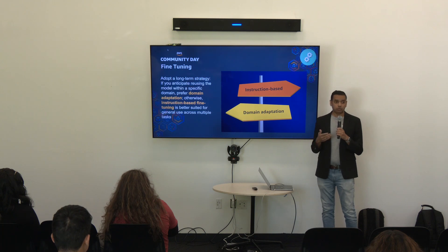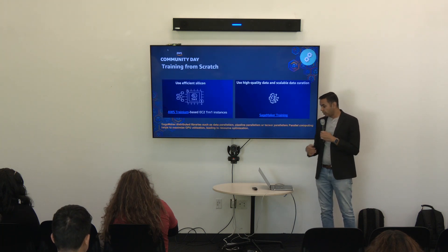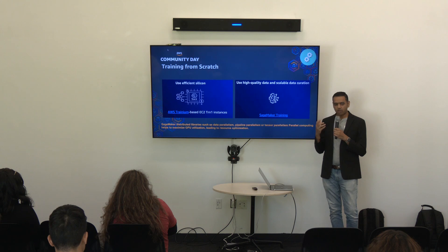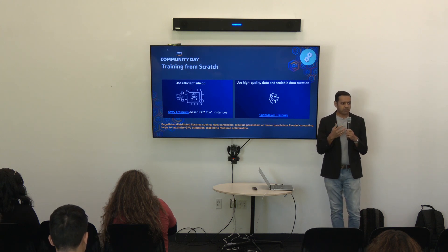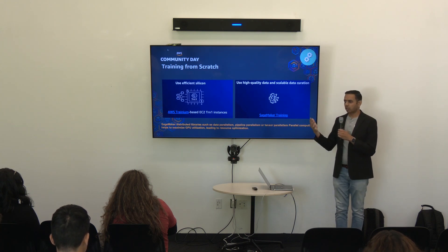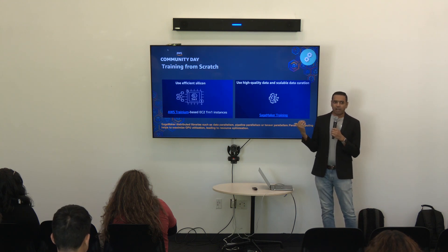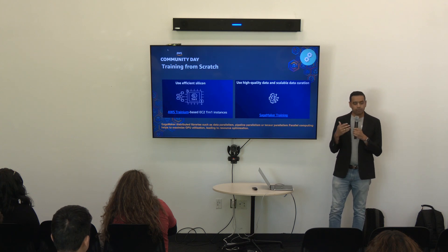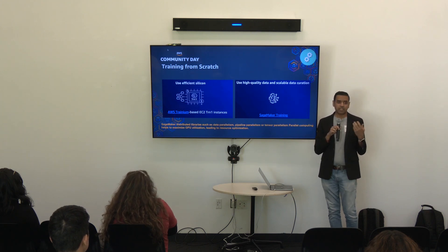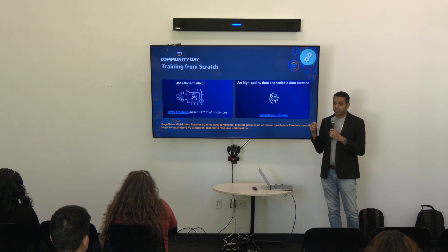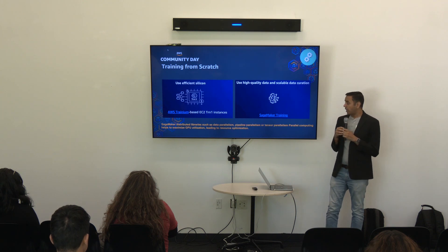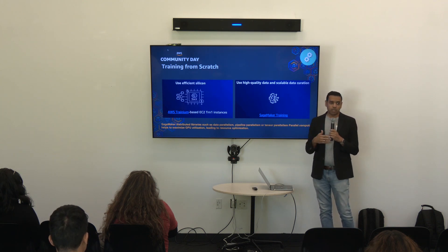If even full fine-tuning cannot solve the problem, the last option is to train your own model. Right now this hasn't been widely adopted, but just as web applications eventually became universal, after five years there could be a scenario where each organization has their own model. For that, you can utilize AWS Trainium instances, which are purpose-built for training models. Trainium helps you leverage maximum GPU performance, reduces cost, and is more sustainable for model training.